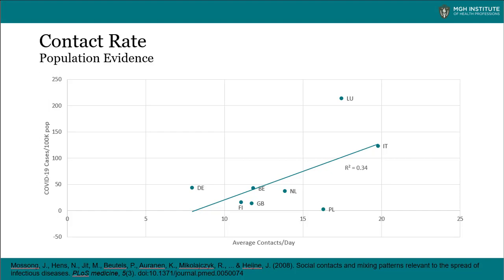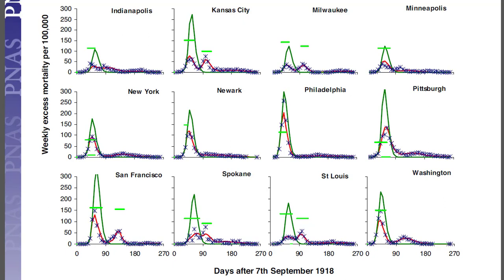There was also variation between the eight countries. This slide shows the number of COVID-19 cases per capita in those countries on the y-axis and their average contacts per day on the x-axis. Italy had the greatest number of contacts per day at 19.77, and Germany had the fewest at around 8. This is correlated with the number of COVID-19 cases per capita they have presently. The contact rate is the main target of community mitigation efforts like school and business closures.